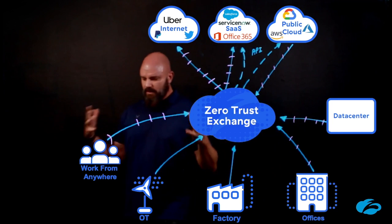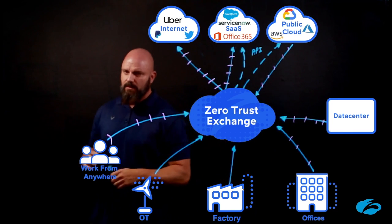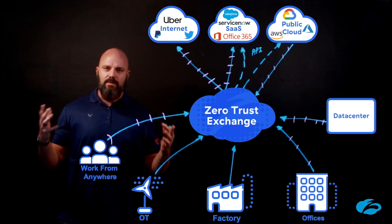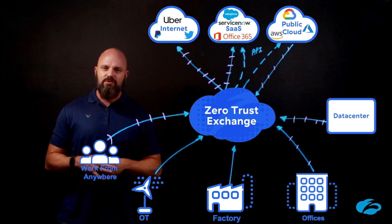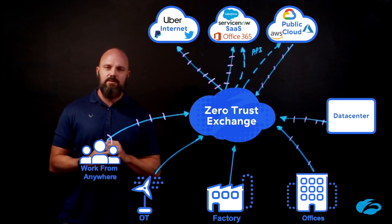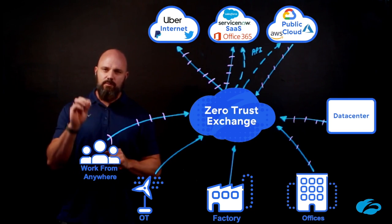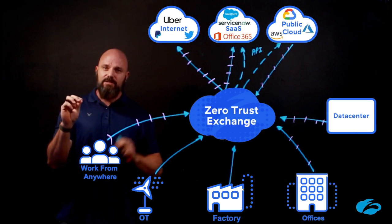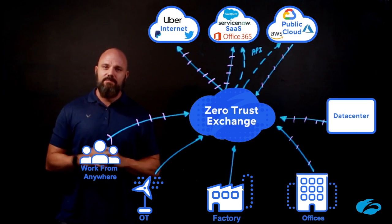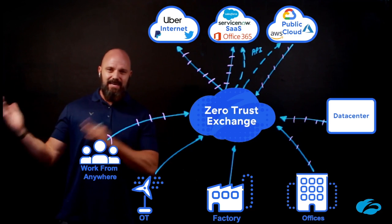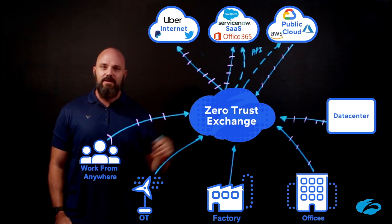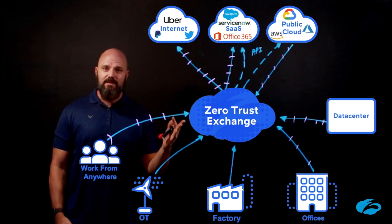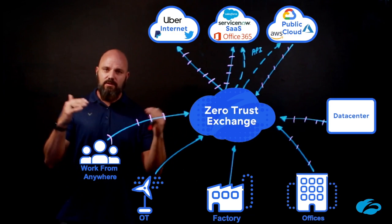The last thing I want to talk about on Zero Trust — whether it's a user or a workload — we've got to stop giving too much access. The way we do this is user-to-application segmentation or application-to-application segmentation. Keep those users off the network. Stop those OT devices from talking to anything. Really start to lock it down.